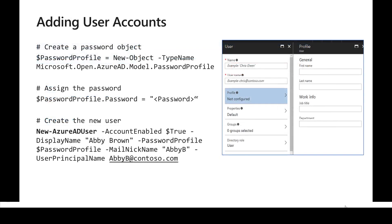We can use PowerShell or the Azure portal to create such accounts. First, we need to create a password profile using New-Object for password profile, and once we set the password we can use the cmdlet New-AzureADUser and pass the right parameters to create a new Azure AD user in Azure Active Directory.